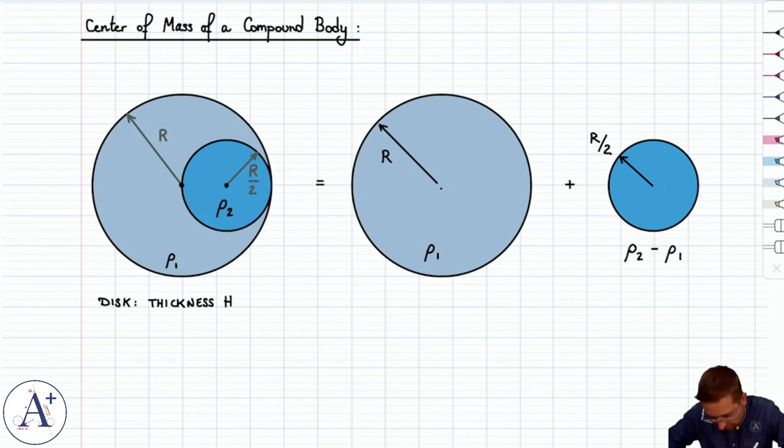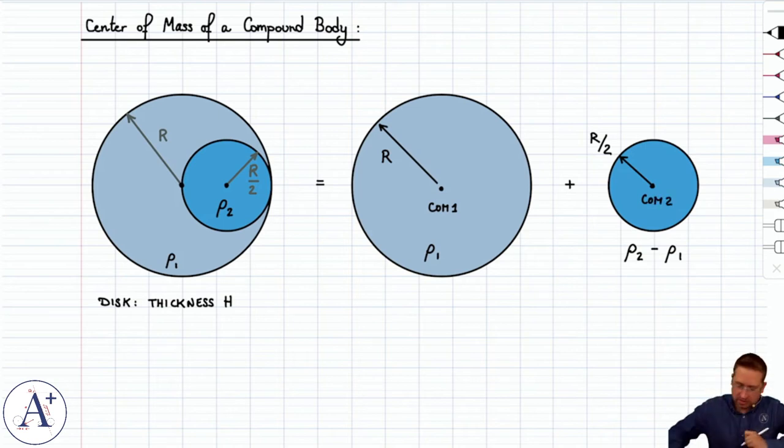So we already know, without doing any math, that the center of mass of this disc here is going to be at its center, and the center of mass of this disc here is going to be at its center. Now, how do we go from there to the center of mass of my compound body?